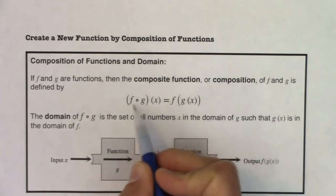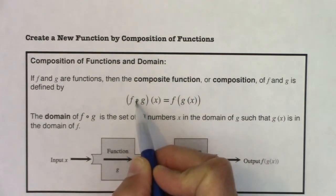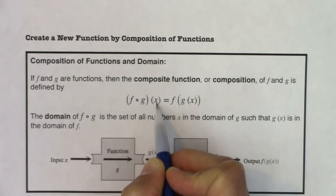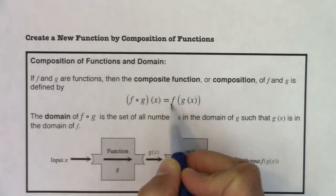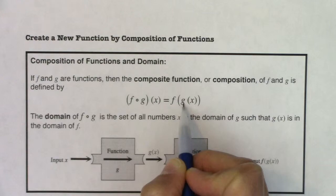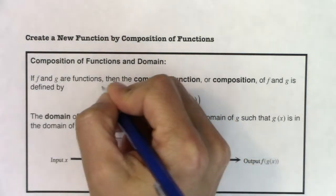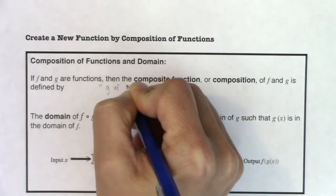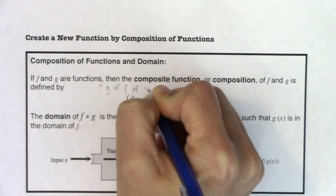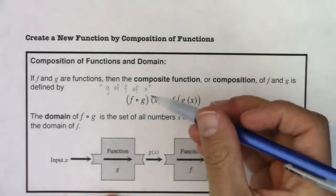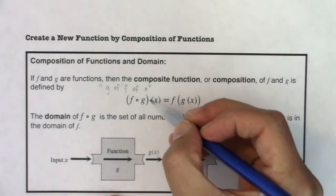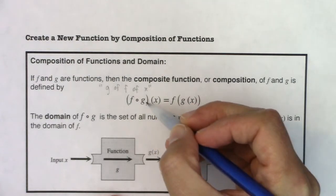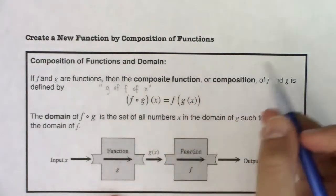You see this symbol here — you have f, you have a little hollow circle, g of x. And then we define it to be f evaluated at g of x. A lot of the times when we say this out loud, we say f of g of x. I want to make a distinction here that this is not multiplication. There's no implied multiplication symbol between the f, g, and x. This is function notation.